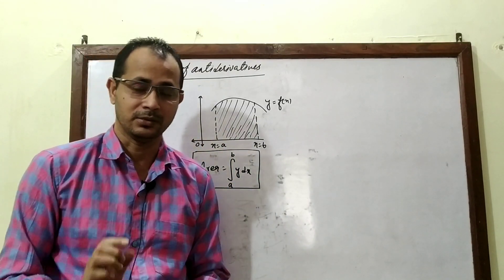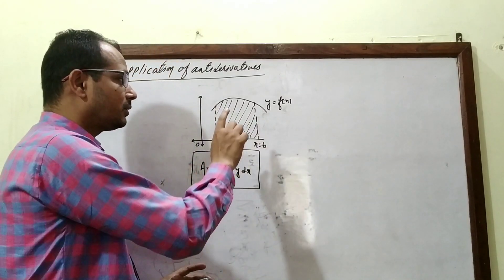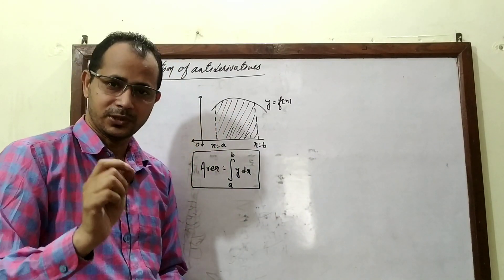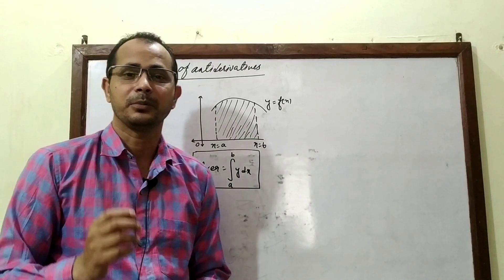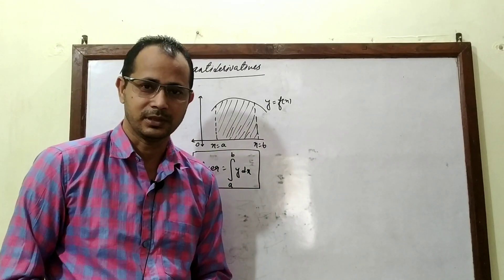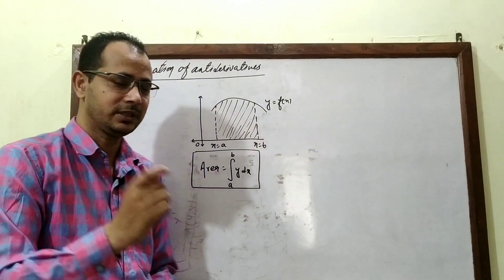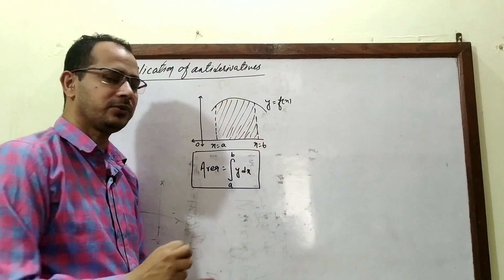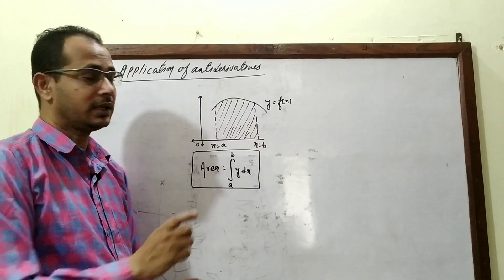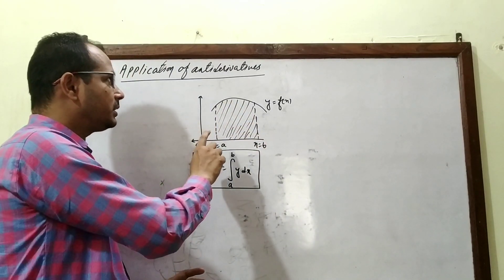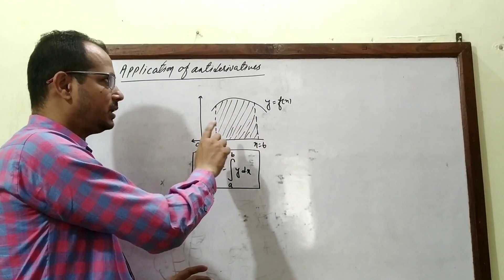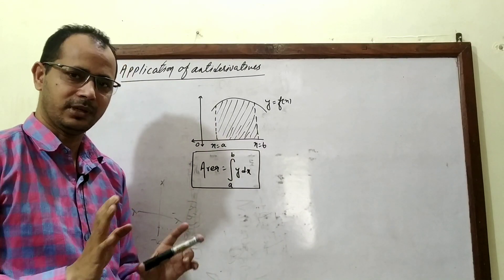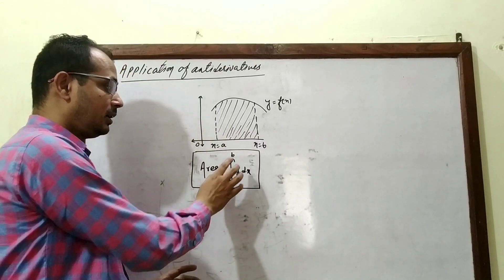Just as the area of a triangle is half into base into height, area of a parallelogram is base into height, and area of a circle is πr², similarly, to find the area of irregular figures, we use integration — that is, the help of anti-derivatives.